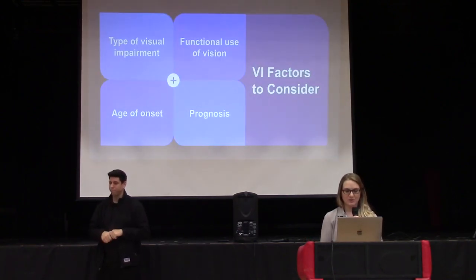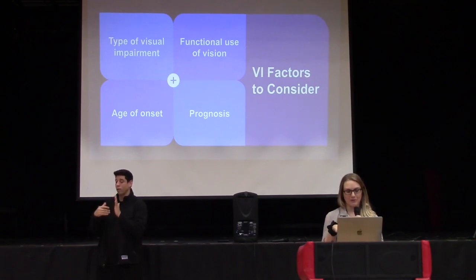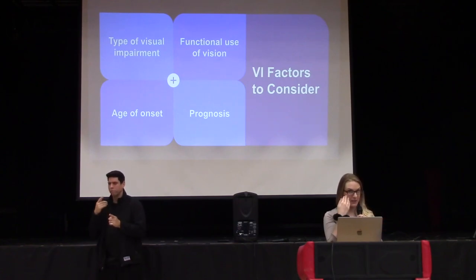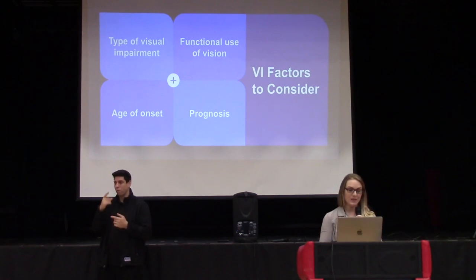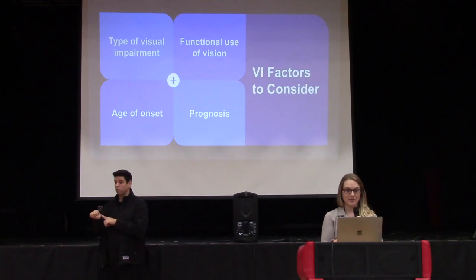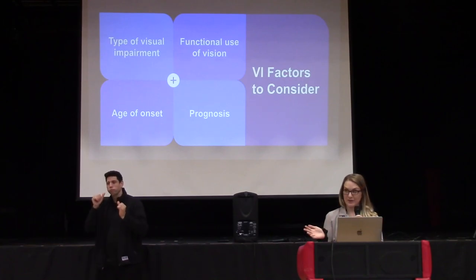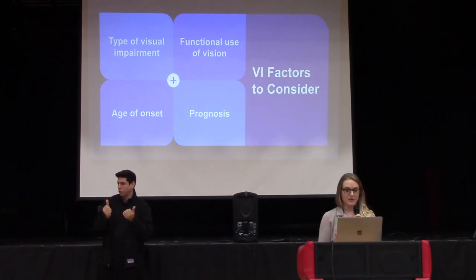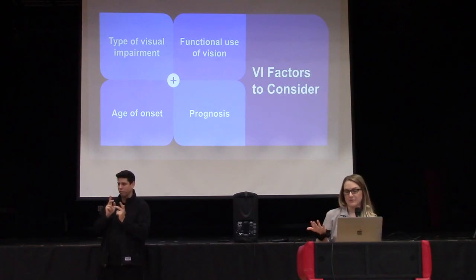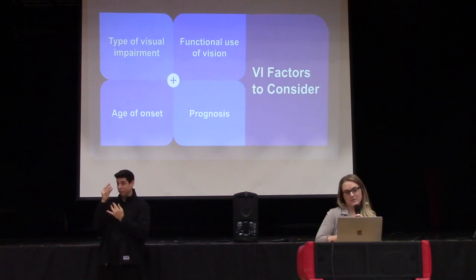When looking at a student with visual impairment, consider the etiology — what caused it and what type of visual impairment, whether ocular or brain-based. Consider the age of onset — if it was congenital or acquired later, it will impact their level of visual reference, concept development, and incidental learning. Consider the prognosis — is their vision stable, degenerative, consistent, or fluctuating? And consider functional use of their vision. Where can you get all this information? Your new best friend: your TSVI.